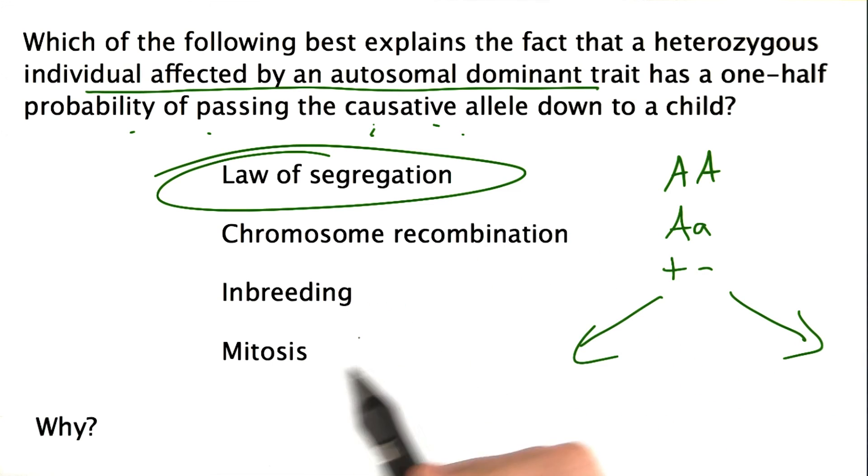Recombination doesn't have anything to do with that. Neither does inbreeding, and mitosis is completely excluded because this is during the process of meiosis.